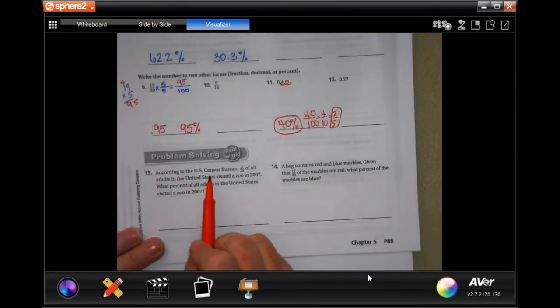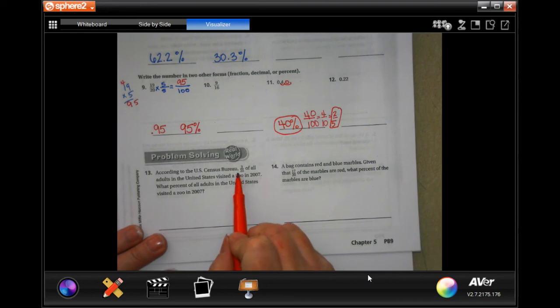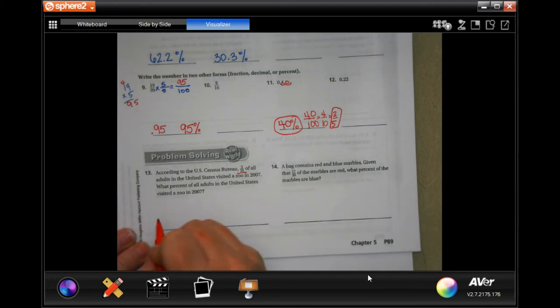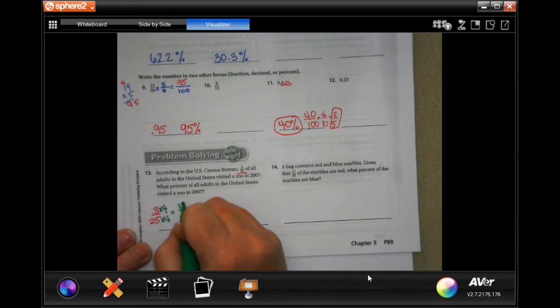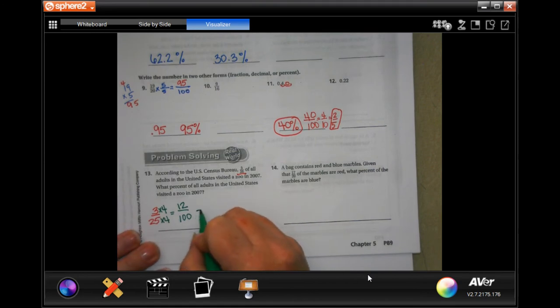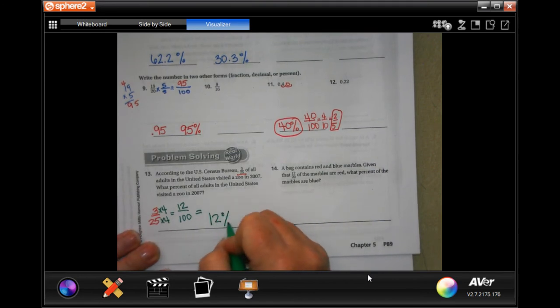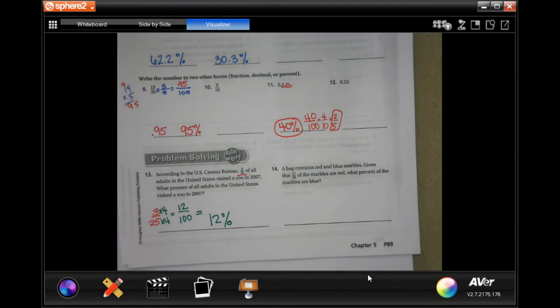Number 13 says that according to the Census Bureau, 3 25ths of all adults in the United States visited a zoo in 2007. What percentage of all adults in the United States visited a zoo? Well, 3 over 25. I need to multiply 25, just like if I had quarters, by 4 to get to 100. And 3 times 4 is 12. So, that is 12 percent.